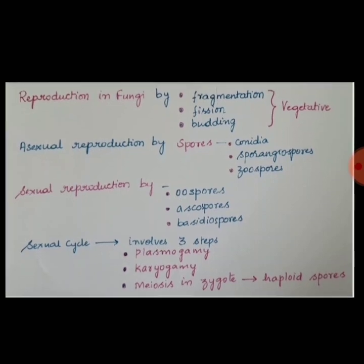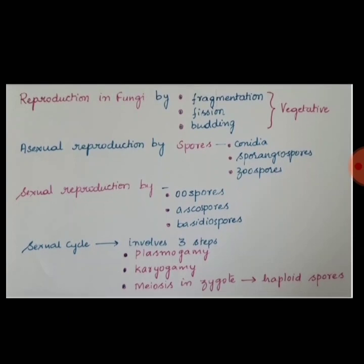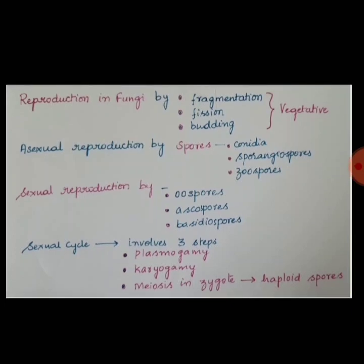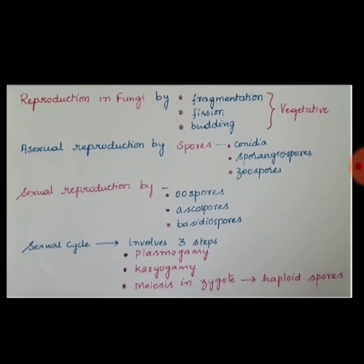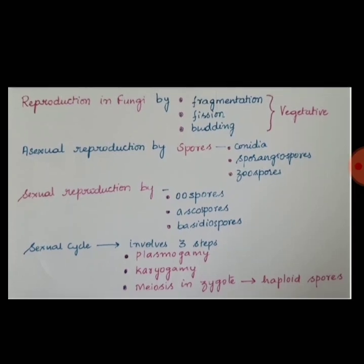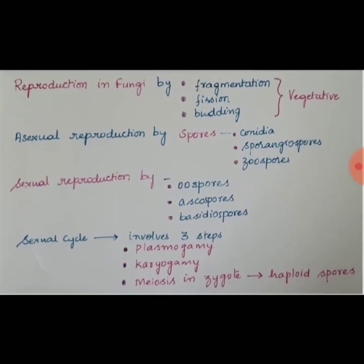In some fungi, a sexual cycle takes place which involves three steps: plasmagamy, karyogamy and meiosis, which results in the formation of haploid spores. Plasmagamy is the fusion of the protoplasm, karyogamy is the fusion of the two nuclei, and meiosis is the last step.